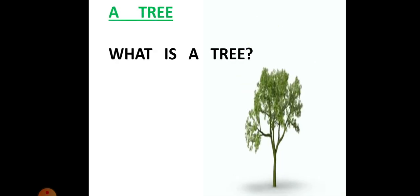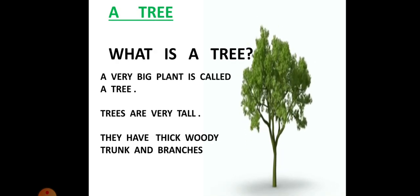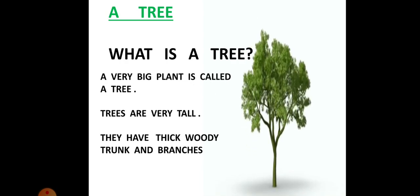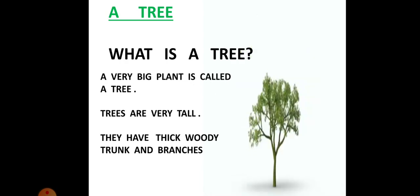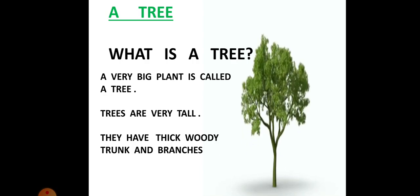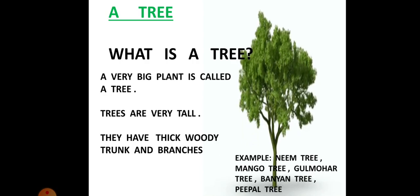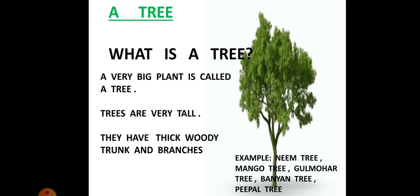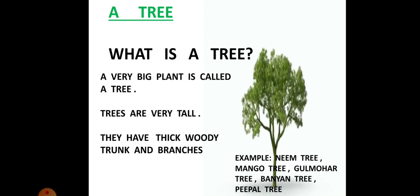Look at that. What is this? A tree. Now what is a tree? A very big plant is called a tree. Trees are very tall. They have thick woody trunk and branches. Some of the examples are neem tree, mango tree, gulmohar tree, banyan tree and peepal tree.